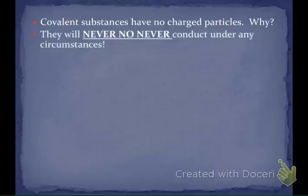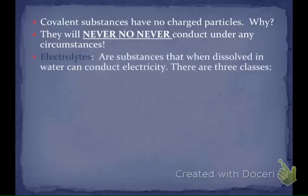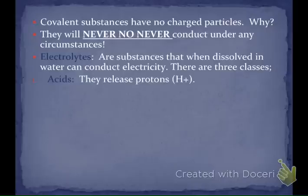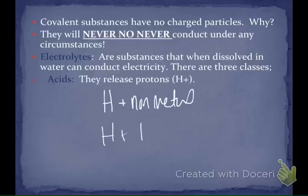Covalent substances are never going to conduct under any circumstances — whether they're solid, whether you melt them, or whether you dissolve them in water. They don't conduct because they don't have charged particles. Electrolytes are substances that when you dissolve them in water, they can conduct electricity, and we have three different types. We have acids — we know something is an acid by looking for hydrogen in the first position, so it could be hydrogen plus some nonmetal, or hydrogen plus a polyatomic ion.